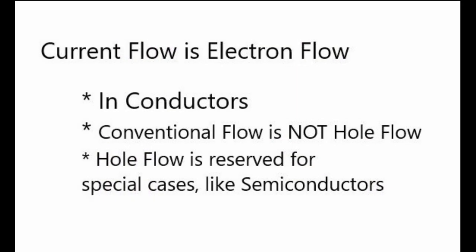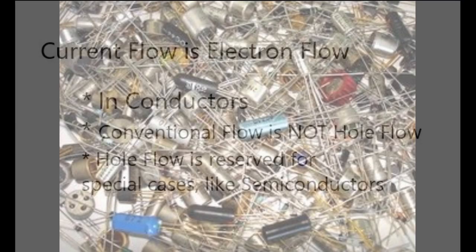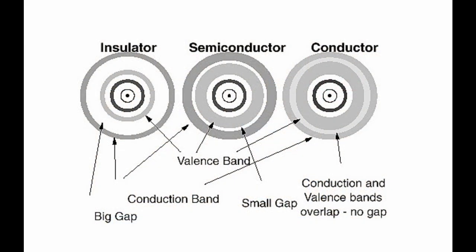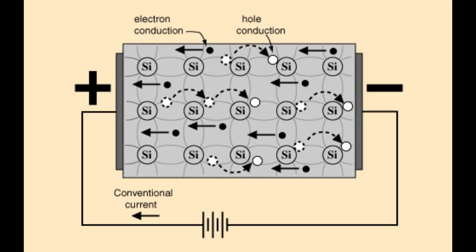Remember, we've got electrons and we've got holes. The holes want to get to the electrons, and the electrons want to get to the holes. We've learned about conductors and insulators, so let's learn about semiconductors. A good conductor has one or two valence electrons. An insulator has eight. A semiconductor might have four — it's neither a good conductor nor a good insulator.